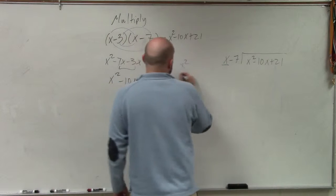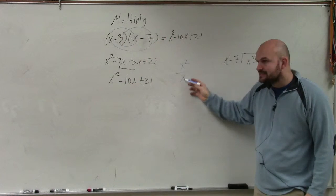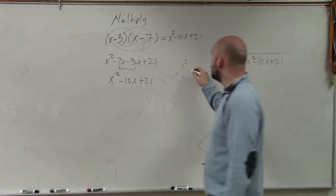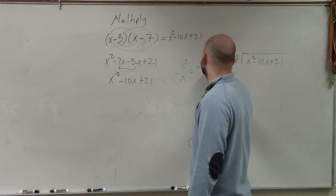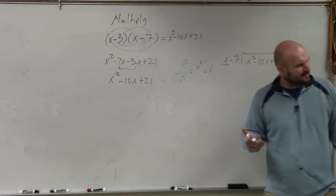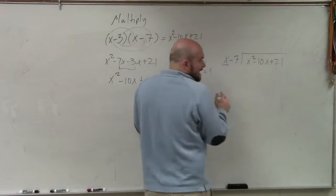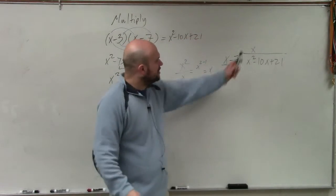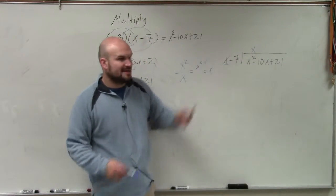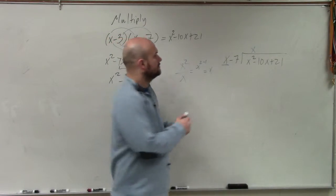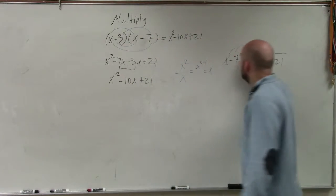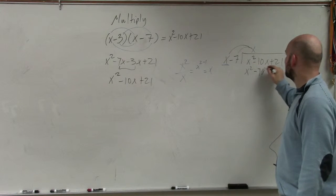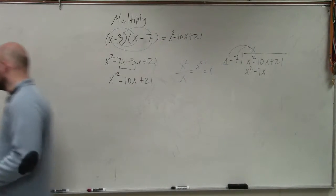Now, I said that out loud, but think about it this way. x divides into x squared how many times? And a lot of times when you guys write it like this, you can say, oh, that is x to the 2 minus 1, which is just equal to x. Right? That kind of makes a little bit more sense. So x divides into x squared x times. Then what we do is we multiply the x times x, and we multiply the x times negative 7.